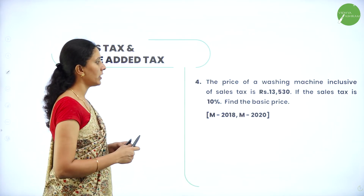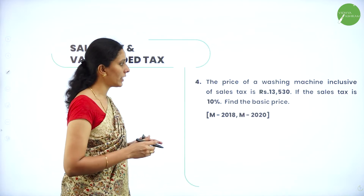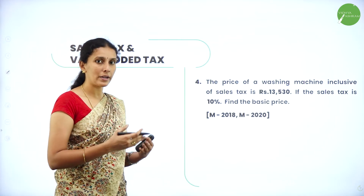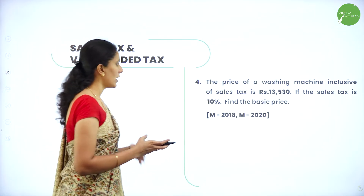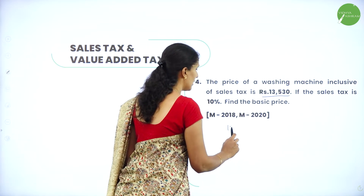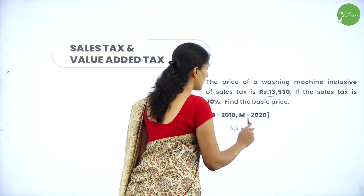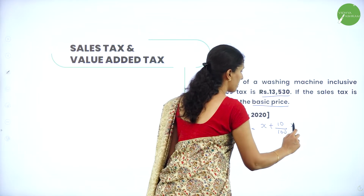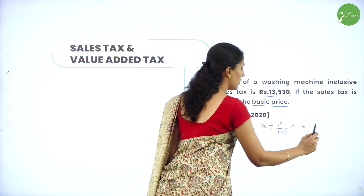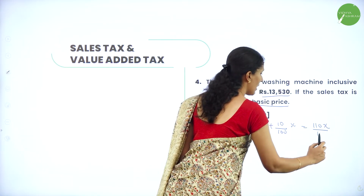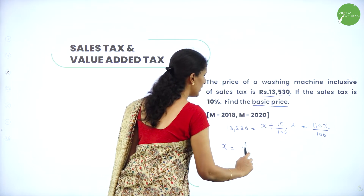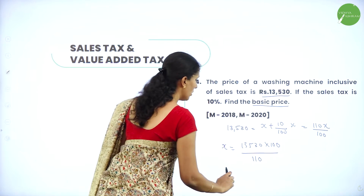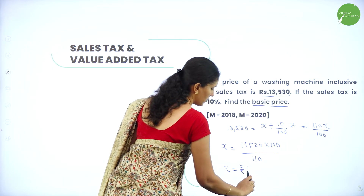Next question: the price of a washing machine inclusive of sales tax is rupees 13,530. If the sales tax is 10 percent, find the basic price. The basic price is the market price. The selling price 13,530 equals x plus 10 percent of x, which is 110x divided by 100. So x equals 13,530 into 100 divided by 110. On solving, we get rupees 12,300.